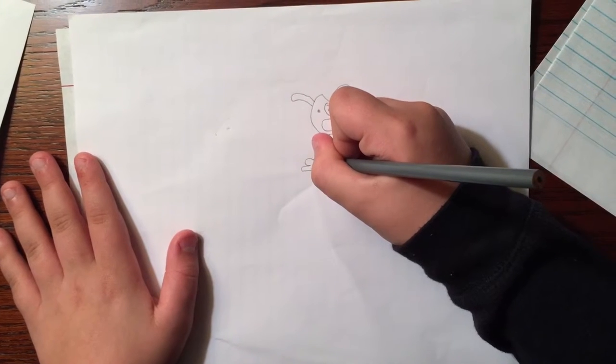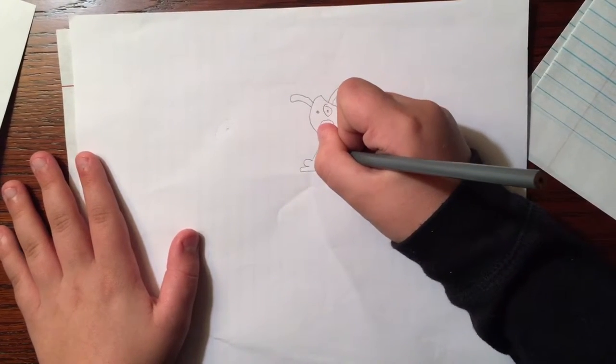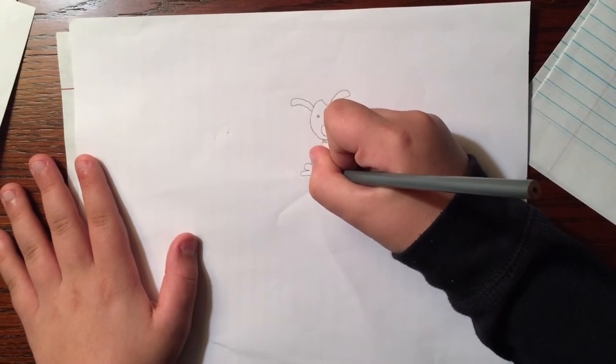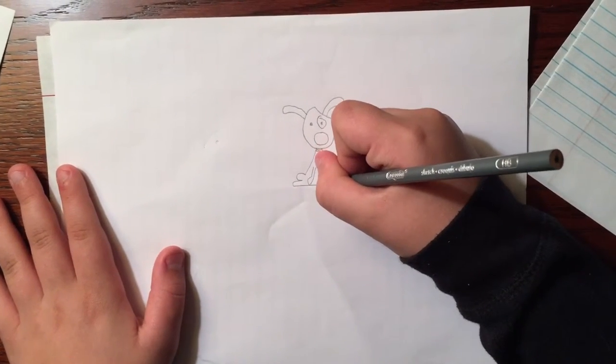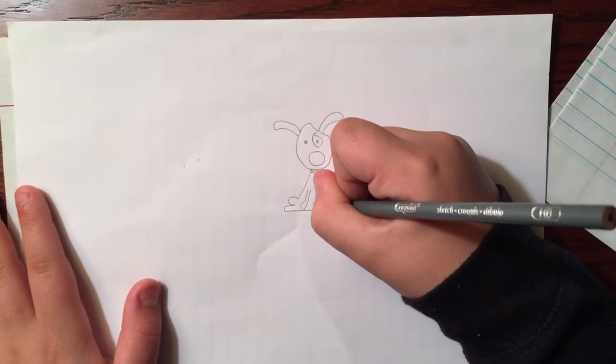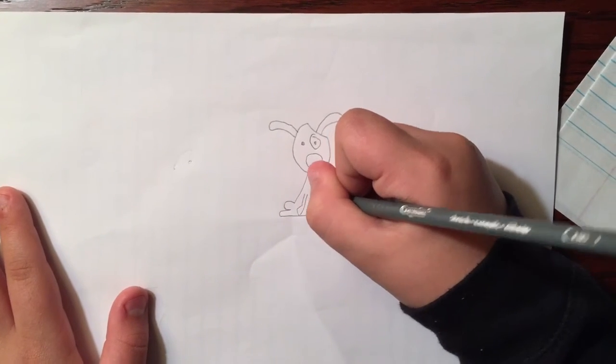Then you could put a little circle and a line like that. Then you can do another little circle and then you do a line.